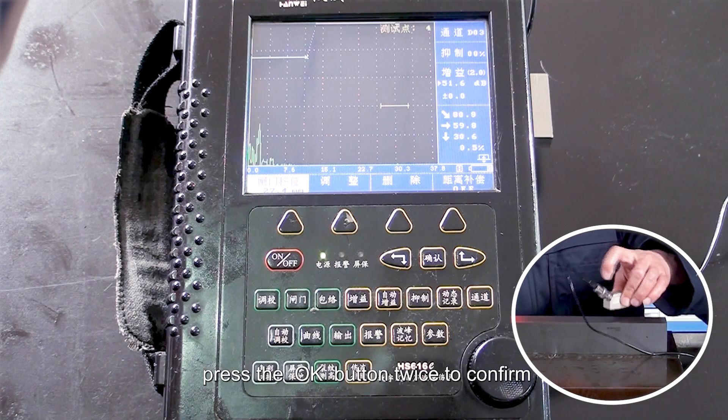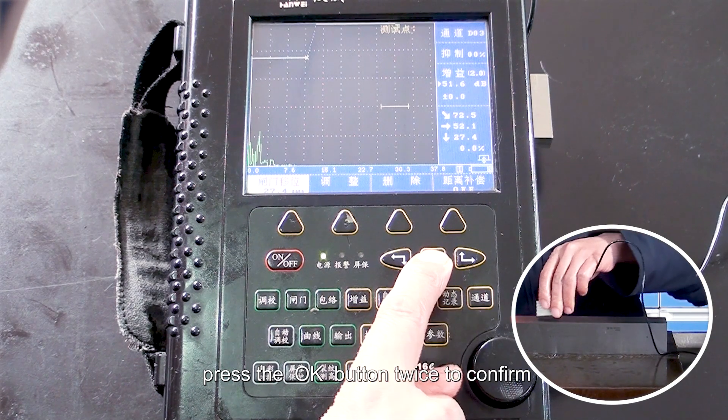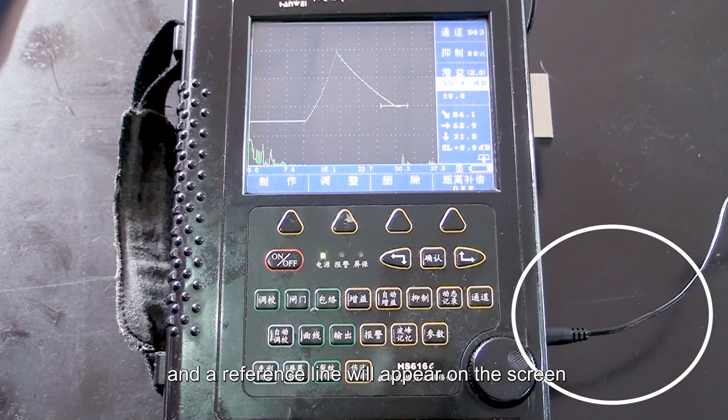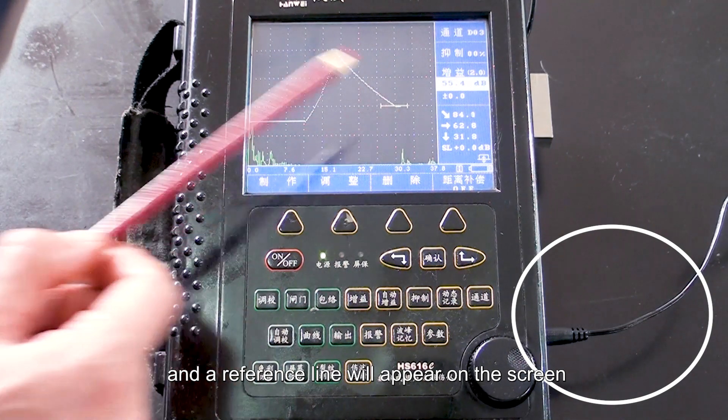After taking the points, press the OK button twice to confirm, and a reference line will appear on the screen.